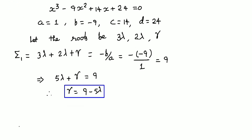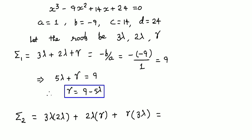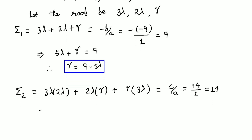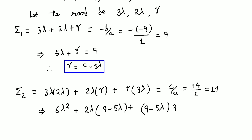For Σ₂, the sum of the products of roots taken two at a time: (3λ)(2λ) + (2λ)(γ) + (3λ)(γ). This equals c/a = 14/1 = 14. Substituting γ = 9 - 5λ: 6λ² + 2λ(9 - 5λ) + 3λ(9 - 5λ) = 14.